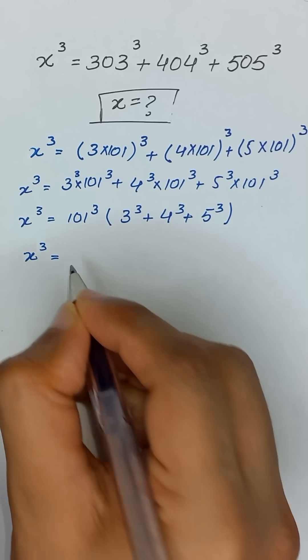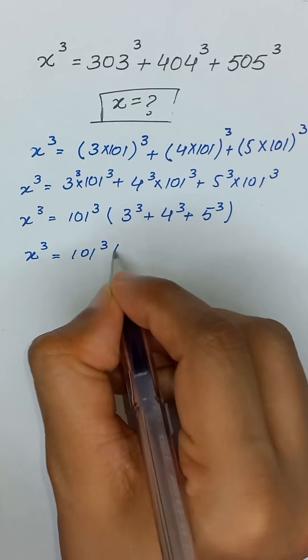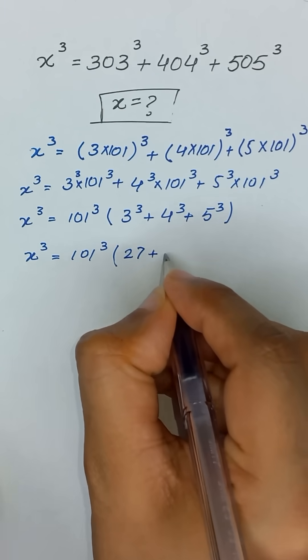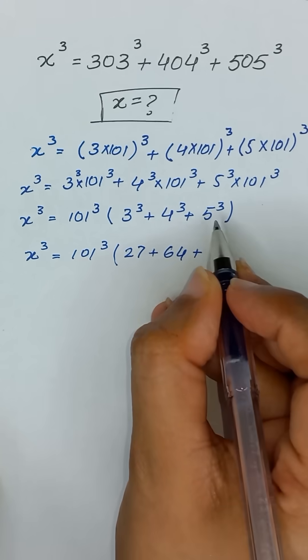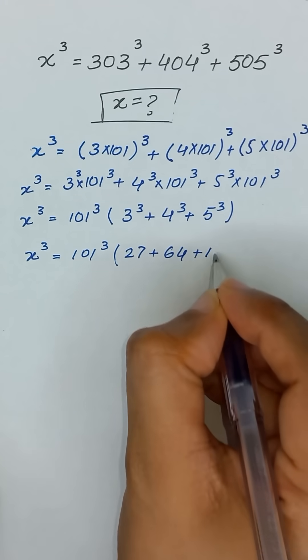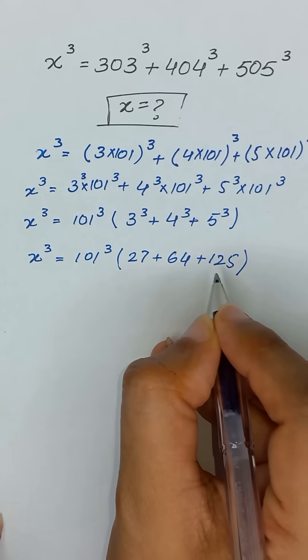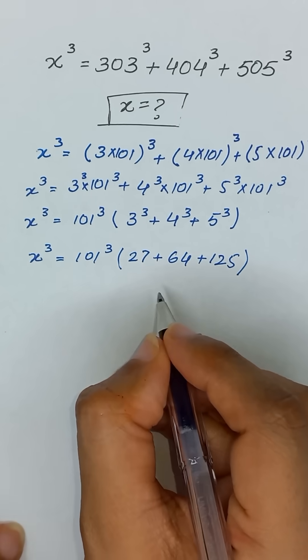Now x cube is equal to 101 cube. 3 cube is same as 27, 4 cube is same as 64, 5 cube is same as 125. And it will give us 27 plus 64 plus 125 will give us 216.